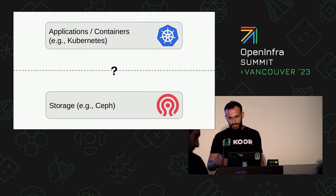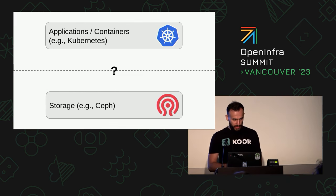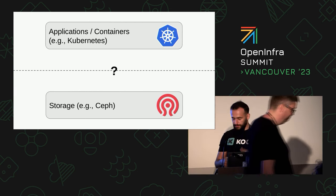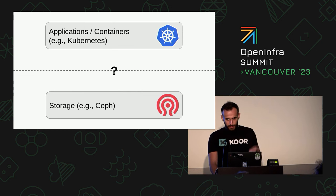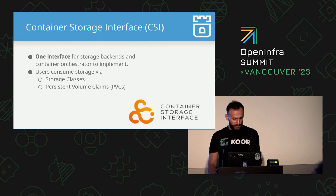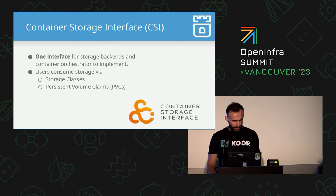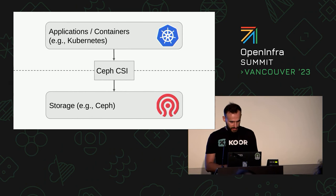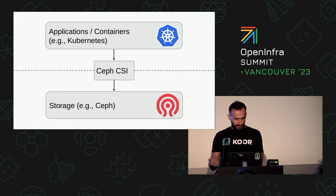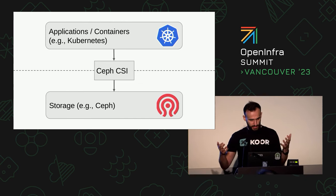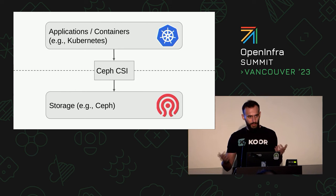For example, if you wanted to use Ceph as your data layer, or any other storage provider, you want to connect it to your application through Kubernetes. How does Kubernetes connect to storage? It does that via the Container Storage Interface, or CSI. It's basically one interface that storage backends have to implement, and container orchestrators implement too. Users can consume the storage via a storage class and persistent volume claims, and basically everything connects together and it works. For Ceph, there is an existing project called Ceph CSI that connects your Kubernetes applications to Ceph. But why not also manage Ceph in Kubernetes? This is where Rook comes in.